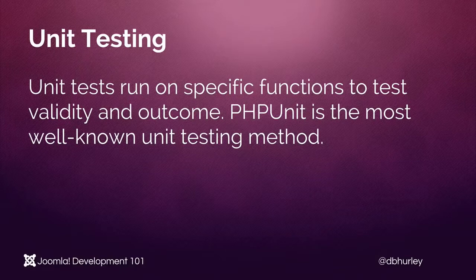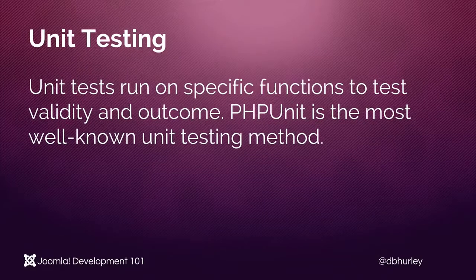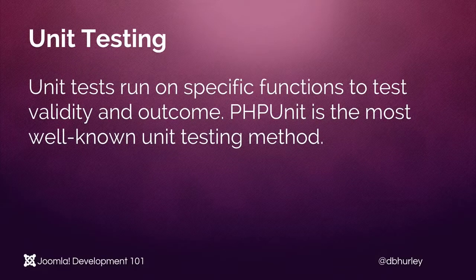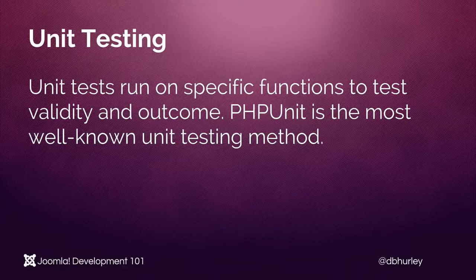These tools are called continuous integration tools. If you look online, you will be able to find a variety of continuous integration, or CI, tools that are available. The most popular ones are Travis and Jenkins. Travis provides an open source, free, online tool that will automatically check your code against your unit tests every time you commit to a branch. Travis, unit testing, and continuous integration is what is used by the Joomla CMS.